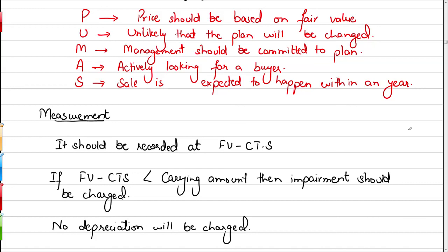The other part of this accounting standard relates to the presentation of financial statements — specifically discontinued operations. If you are discontinuing a part of your organization that is largely independent, such as a separate geographical location, a separate sector of the business, or a subsidiary, that would meet the definition of a discontinued operation. Any discontinued part of operations needs to be reflected separately in your financial statements.